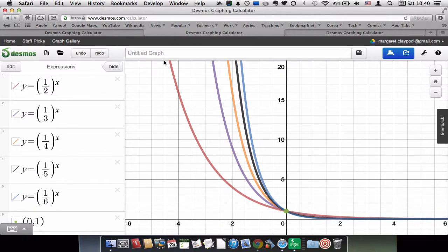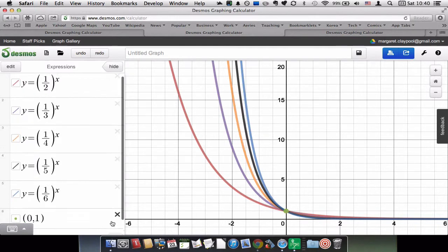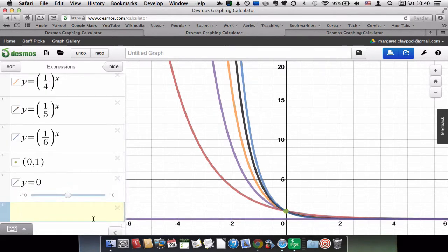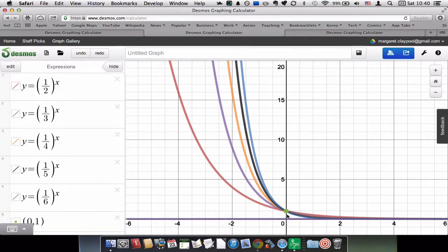And interestingly enough, these also are exponential functions, but they're flipped across the y-axis. So they all go through the point (0,1), they all have a horizontal asymptote at y equals zero, but they're flipped across the y-axis. That's very interesting.